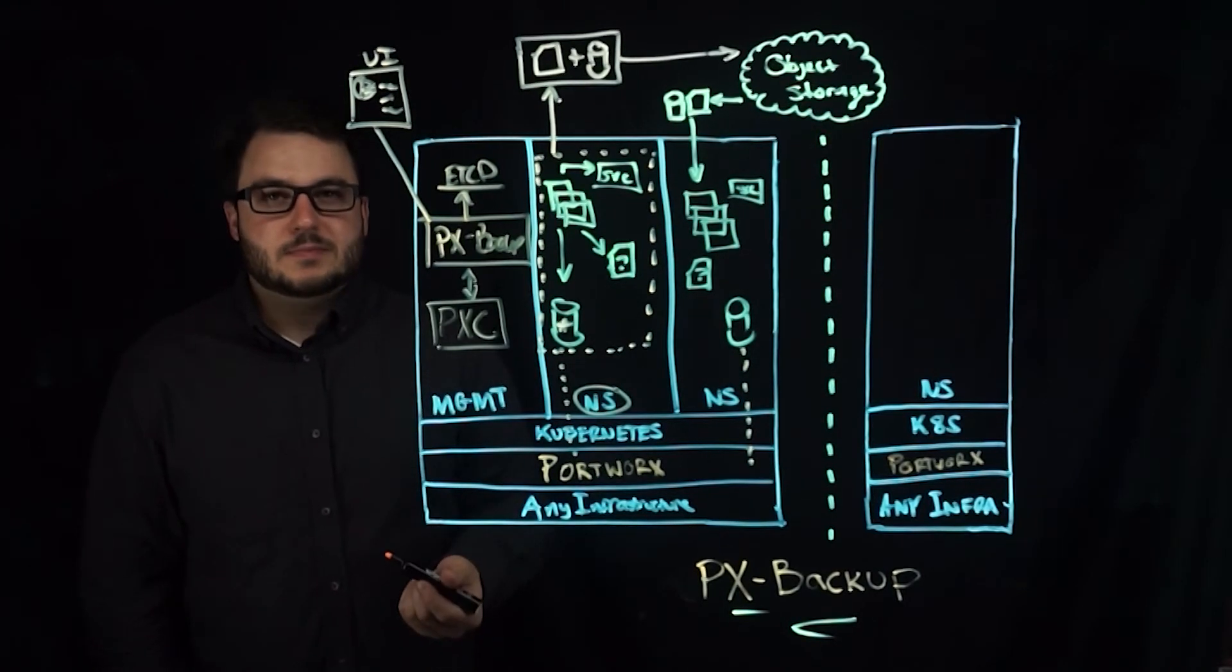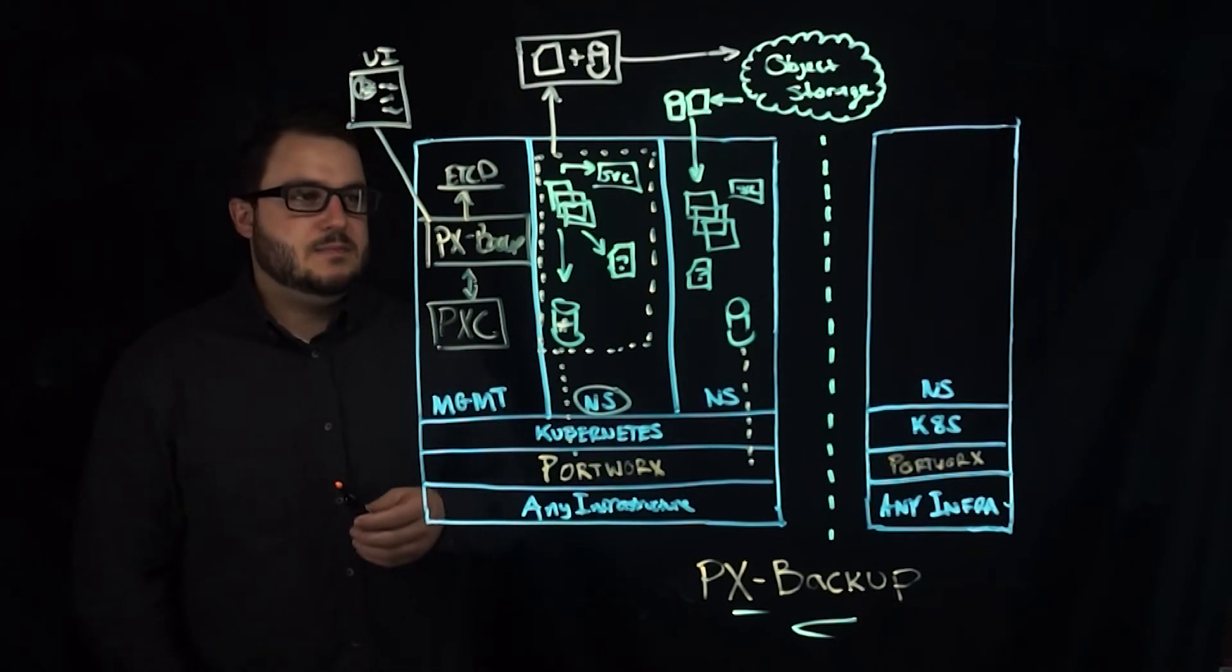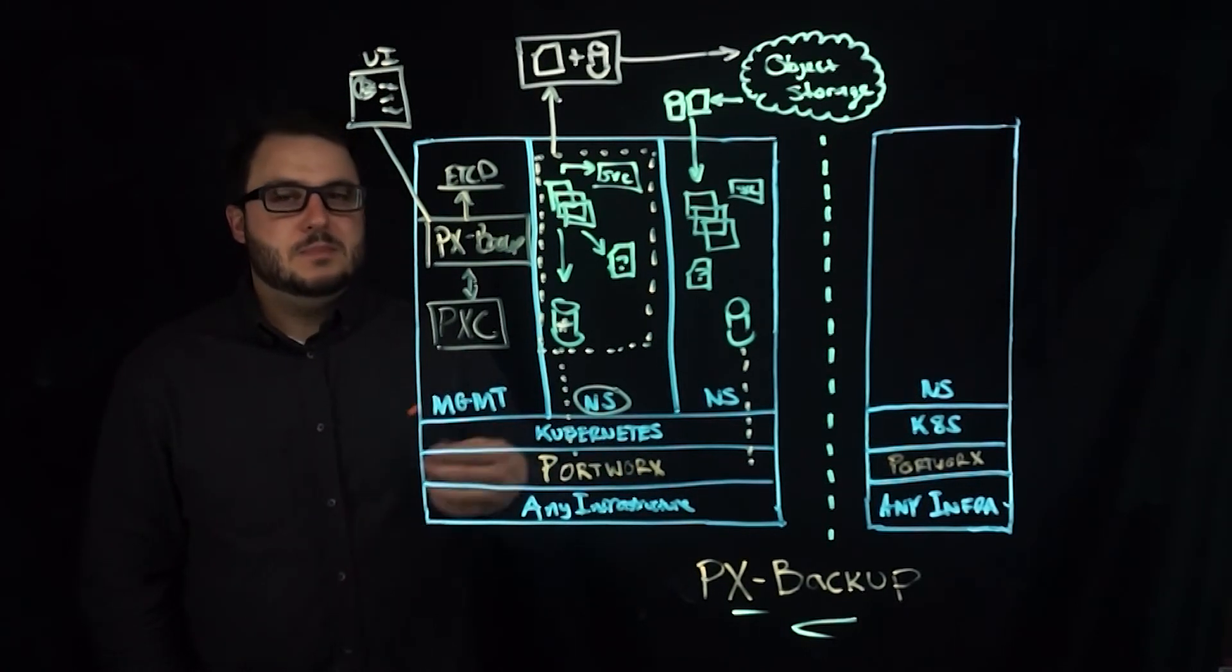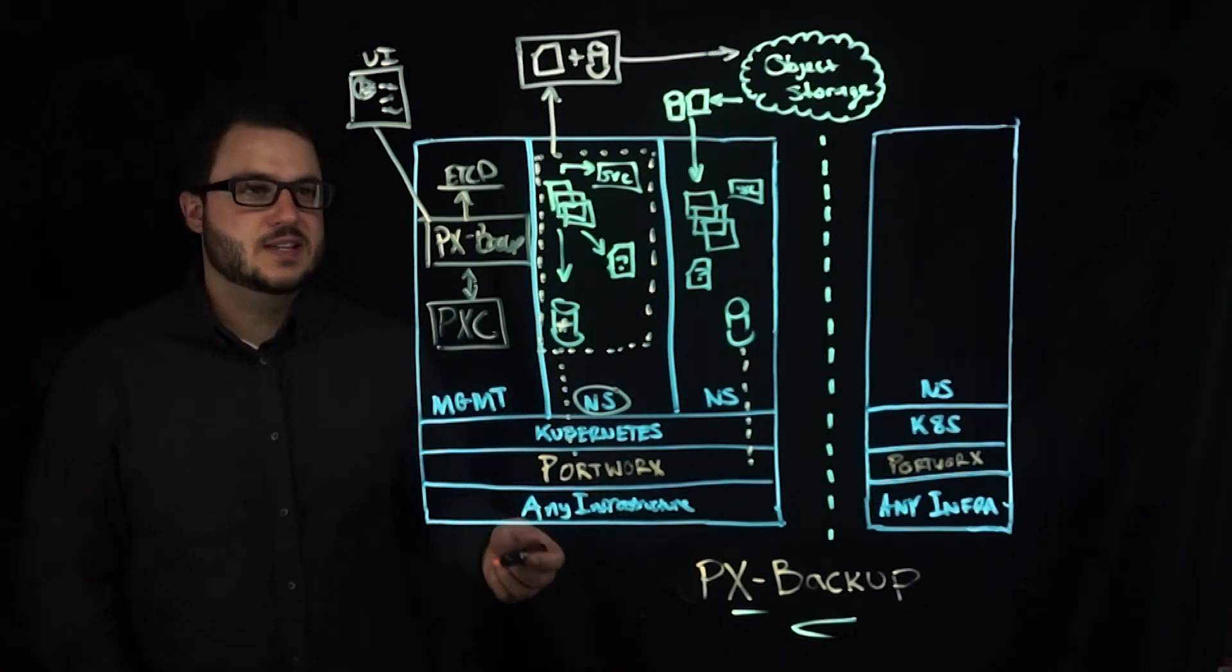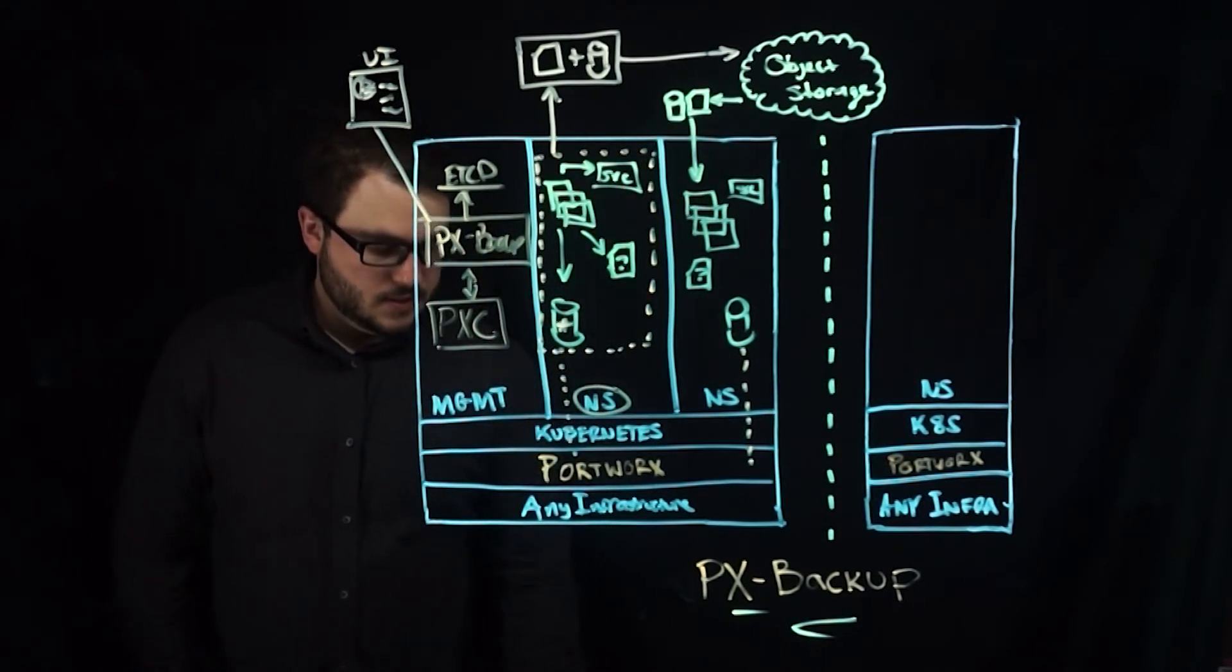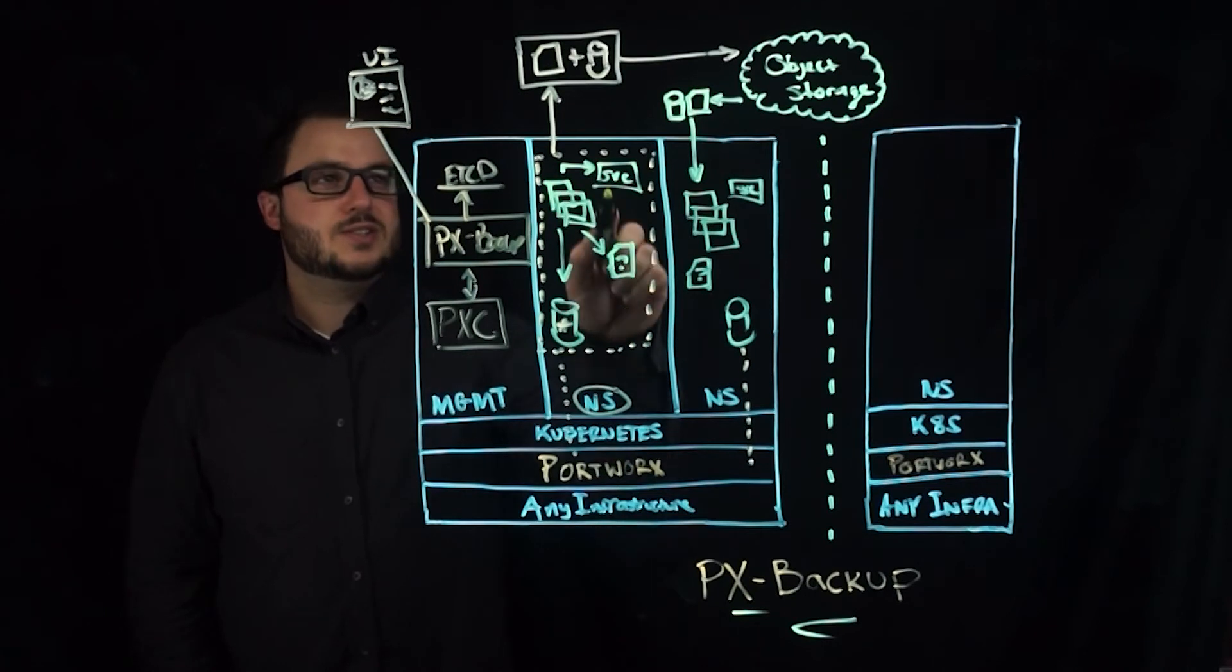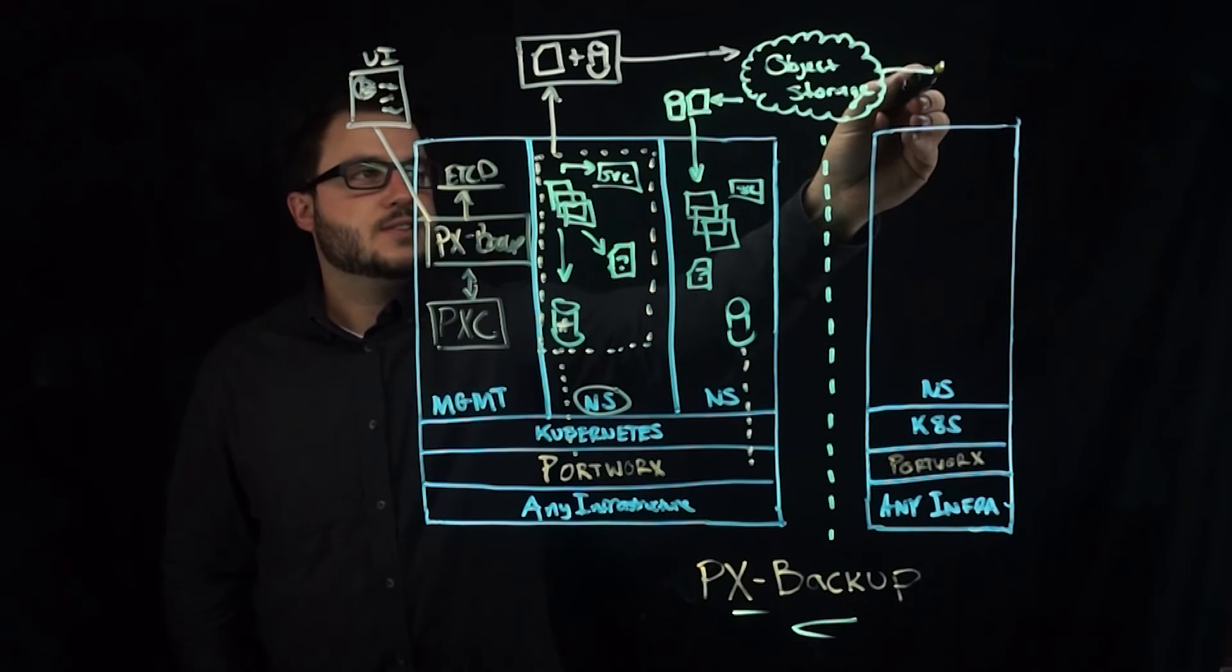Object storage is definitely your backup target, but this means S3. It means S3 compatible storage like Ceph. It means MinIO and various other ones that you can use to store your backups. So that also means that you can select a backup target and backup your application such that it can be restored to an entirely different Portworx and Kubernetes cluster.